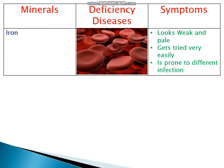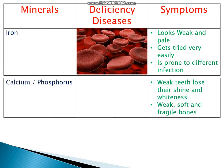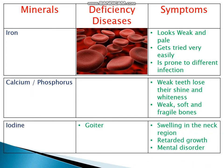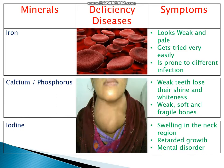Calcium and phosphorus deficiency shows symptoms like weak teeth that lose their shine and whiteness, and weak, soft, and fragile bones. Iodine deficiency causes goiter, which is enlargement of the neck glands. A person shows swelling in the neck region, retarded growth, and mental disorder. Interestingly, hemoglobin is a pigment found in blood which transports oxygen and provides red color to the blood.